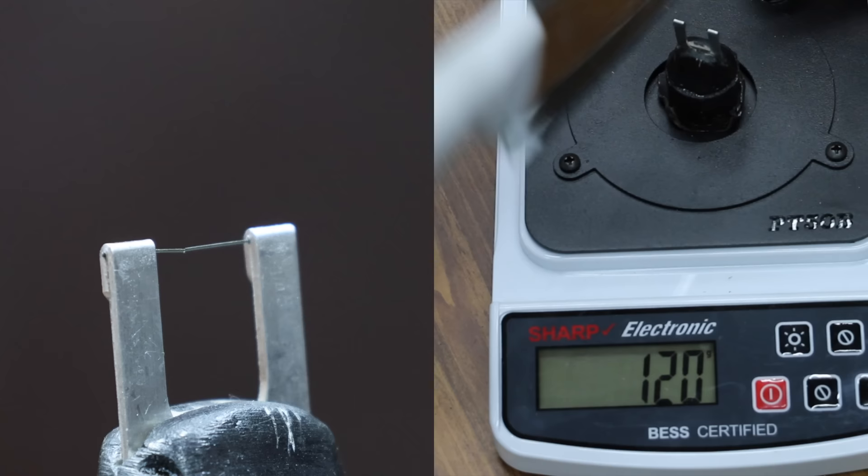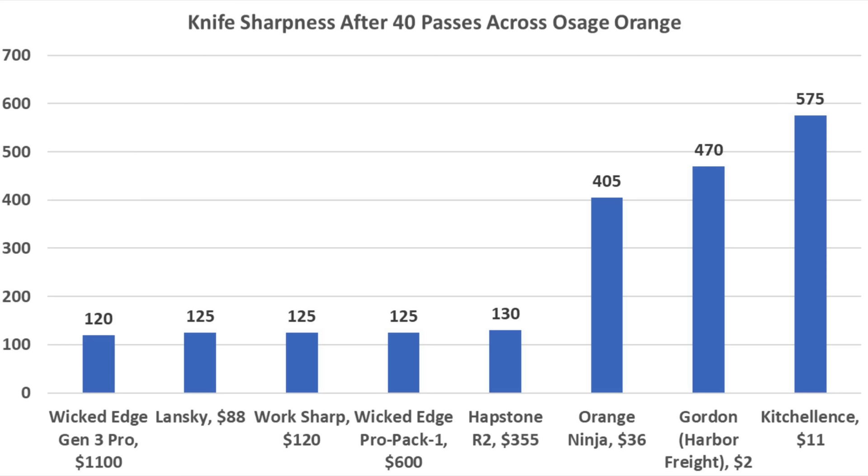And the Wicked Edge Gen Pro 3 started off the sharpest at 90. And the Wicked Edge ended up at just about the same sharpness as the other sharpeners at 120. So after 40 back and forth passes across the osage orange, the Wicked Edge Gen Pro 3 is still the sharpest knife. However, three of the other sharpeners ended up in a tie.